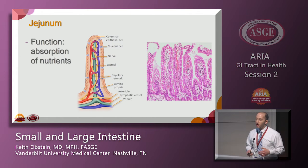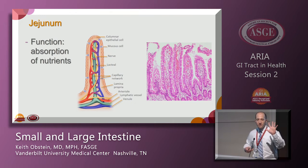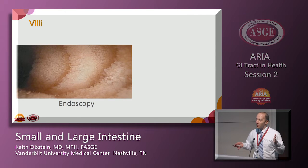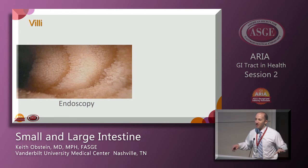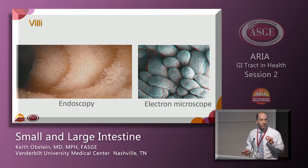The jejunum has finger-like projections called villi, which expand the surface area of the small bowel. In endoscopy they look like coral — when you put some water in, they float back and forth. That expanded surface area is roughly the size of a tennis court inside of us. Not only does it have these large finger-like villi visible on endoscopy, but there's also a small brush border of microvilli, giving you even further surface area for more absorption.